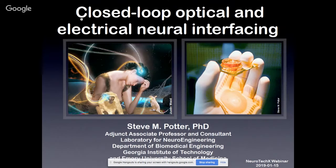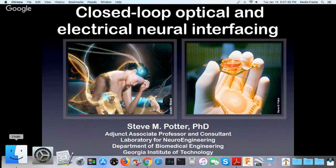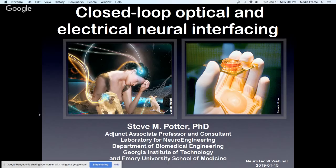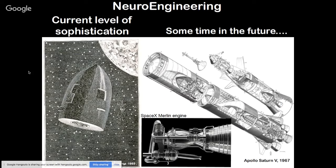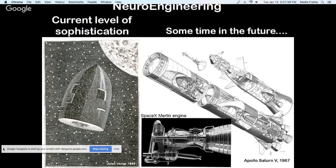I feel like we're at the stage with neuroengineering that Jules Verne was with space travel around 1865. In his story, the astronauts were shot out of a very large bullet with a big cannon up to the moon. It took about 100 years to develop the Saturn V rocket that actually brought people to the moon. One thing that's different now is a lot more feedback systems — like those SpaceX uses when landing — that make these things hit their targets.